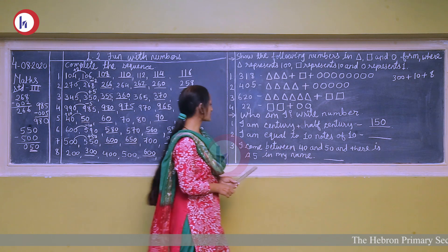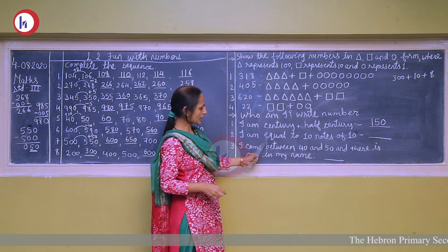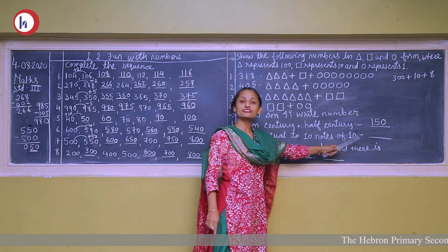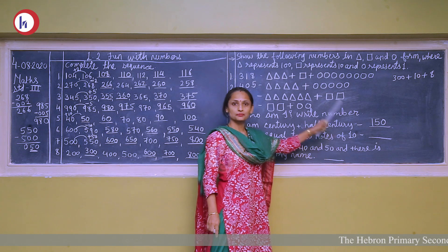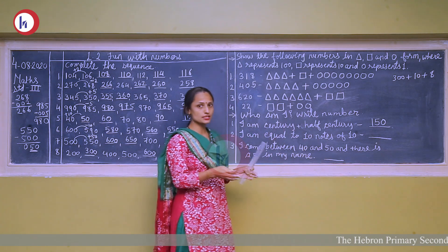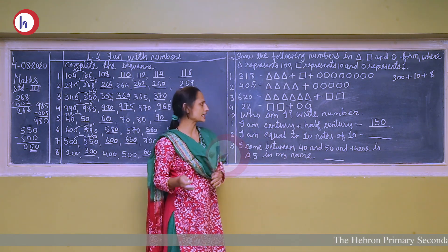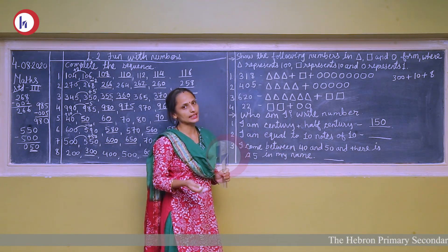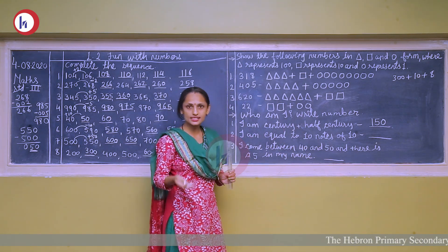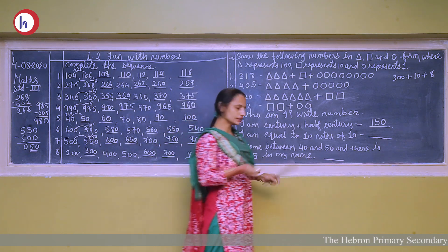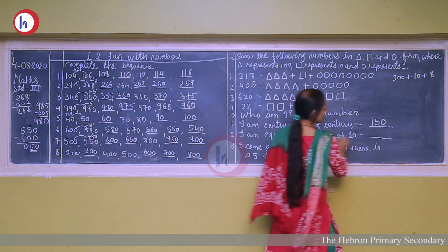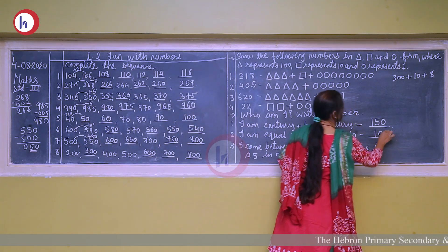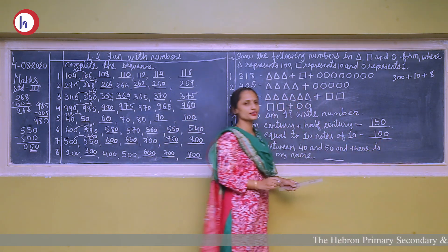Next: I am equal to ten tens. Ten tens means ten multiplied by ten. Ten tens are one hundred. So the answer is one hundred.